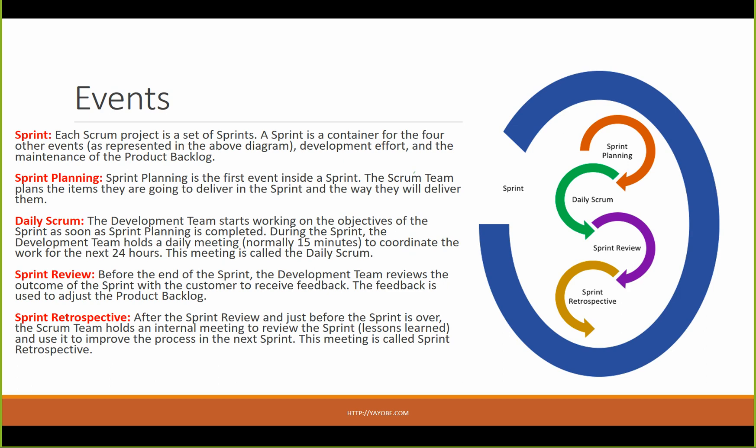A sprint is a container for the four other events. For example, if you have a sprint, you have a specific task you can define. The events within a sprint include the Daily Scrum, the Sprint Review, and the Sprint Retrospective. Therefore, each Scrum project is a set of sprints.